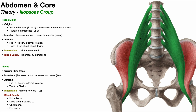Following the muscle belly of psoas major down, we eventually get to a musculotendinous junction, which is going to blend with that of iliacus. Eventually they form a common tendon that exits from the pelvic cavity and attaches on the lesser trochanter of the femur. That common tendon is referred to as the iliopsoas tendon, or sometimes called the conjoined tendon, because it's conjoined between the iliacus and the psoas major.